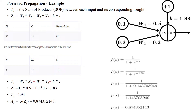Hi, welcome to this artificial neural network example. In an artificial neural network, we have the input layer, hidden layer, and output layer. For this simple example, I have taken only a single neuron.